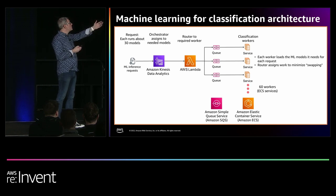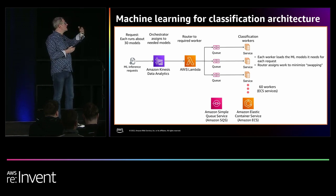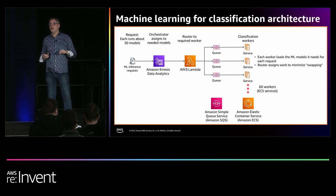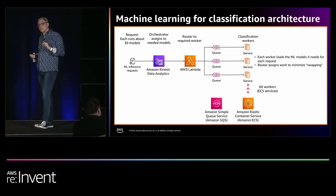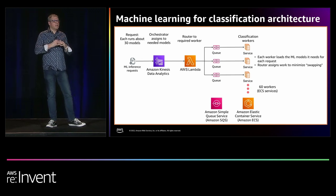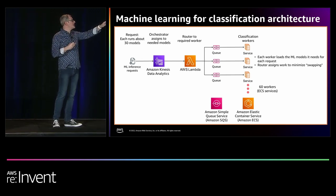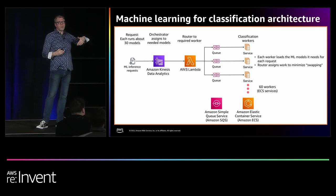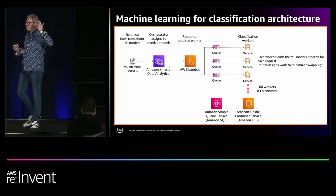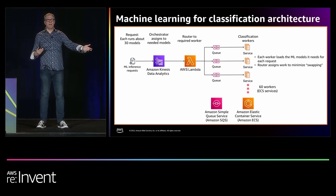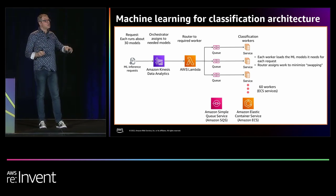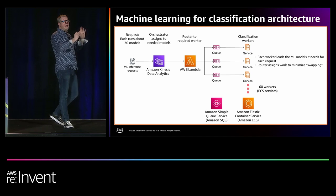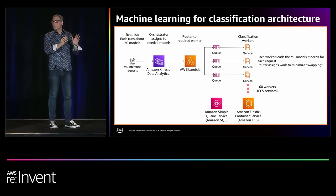In the architectural view, a request for 30 models goes through Kinesis, which reads the metadata and decides what models will be applied. It sends to an AWS Lambda acting as a router — that Lambda says, you need these 30 models, I'm going to send you to this worker. It puts the request on an SQS queue, where ECS workers read it off the queue. There are 60 workers total. The workers are dumb — they'll process whatever you give them. All the smarts are in that Lambda, which attempts to keep each 30-model request going to the same workers that have processed those 30 before, to avoid swapping models out of cache.